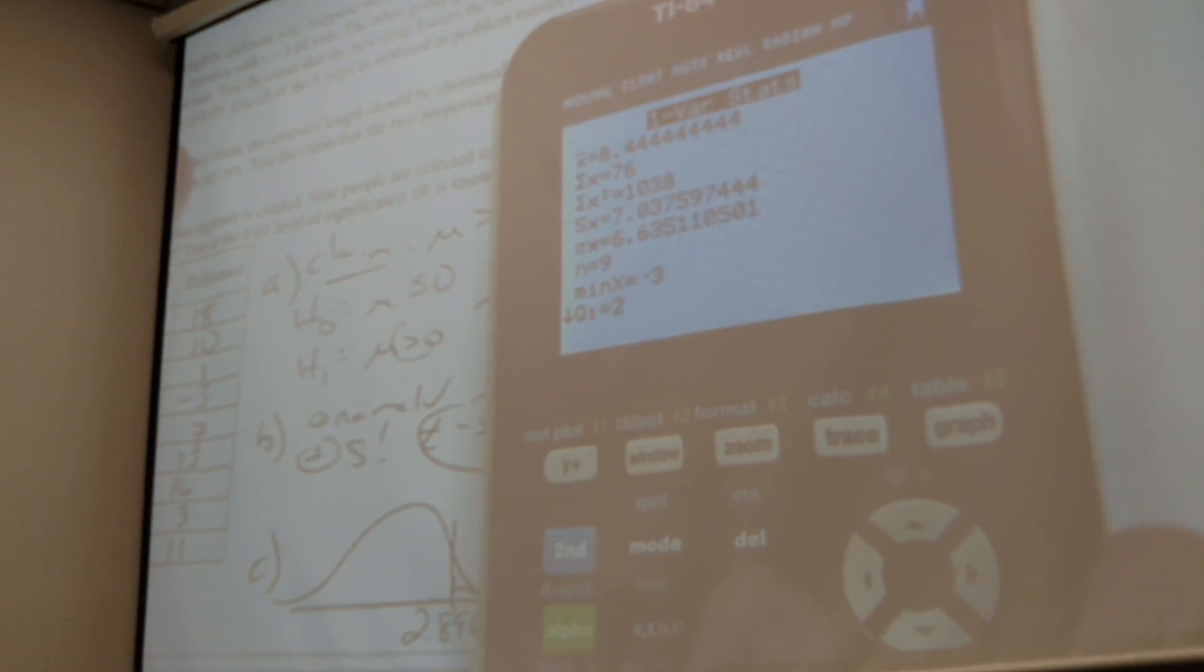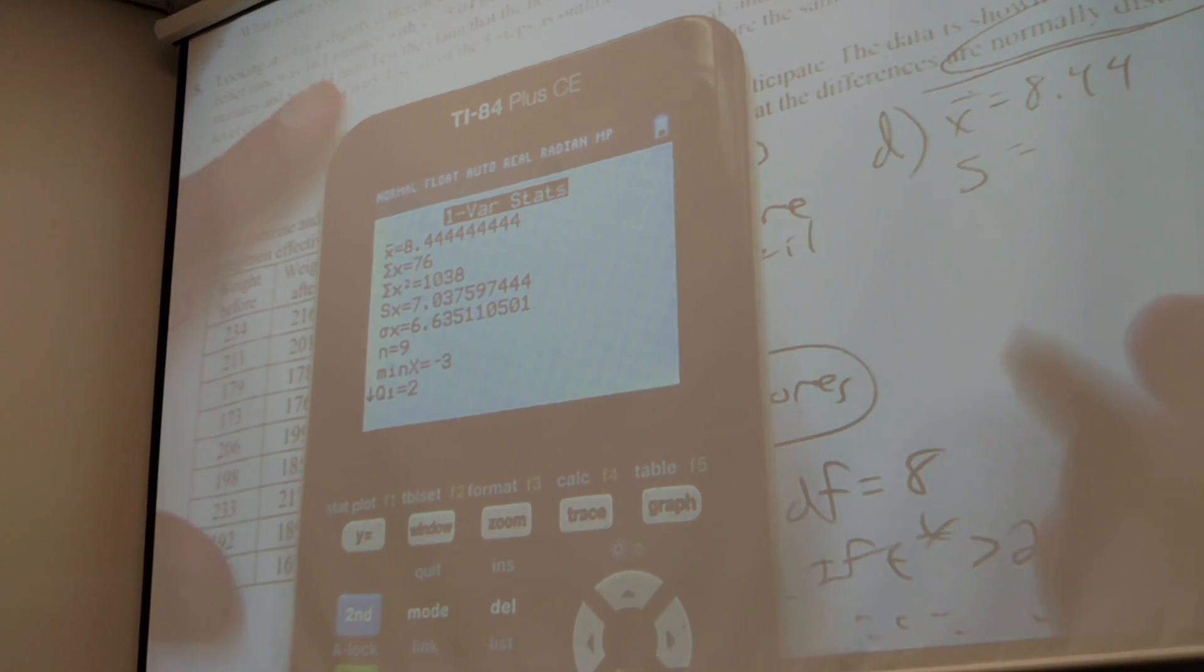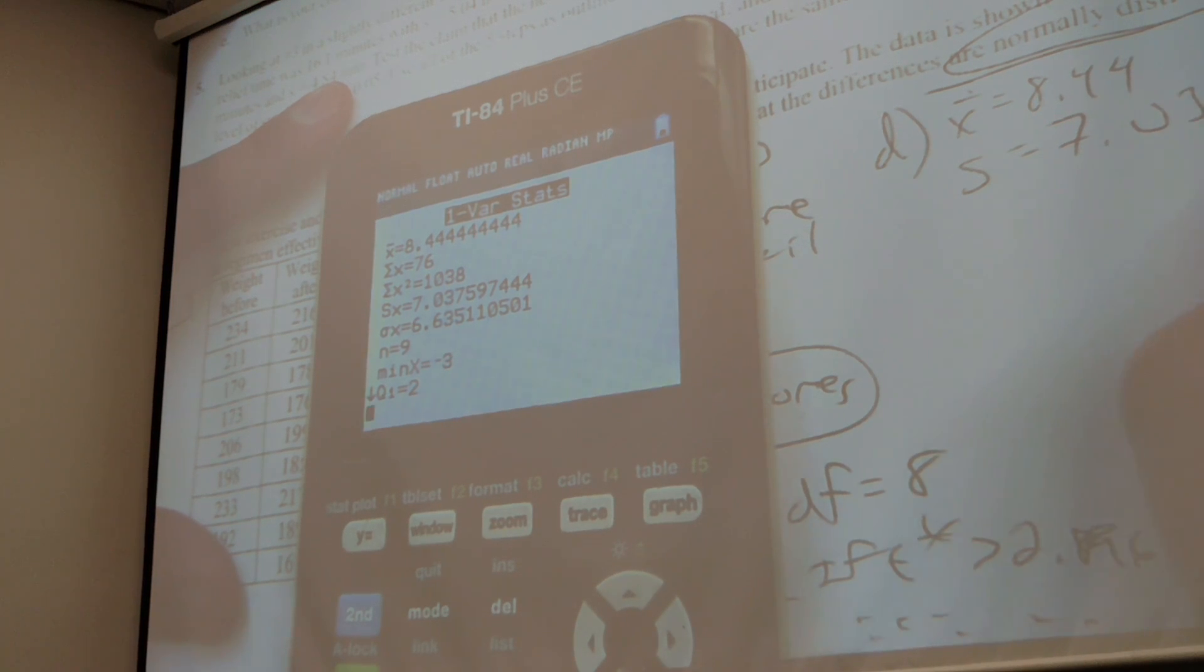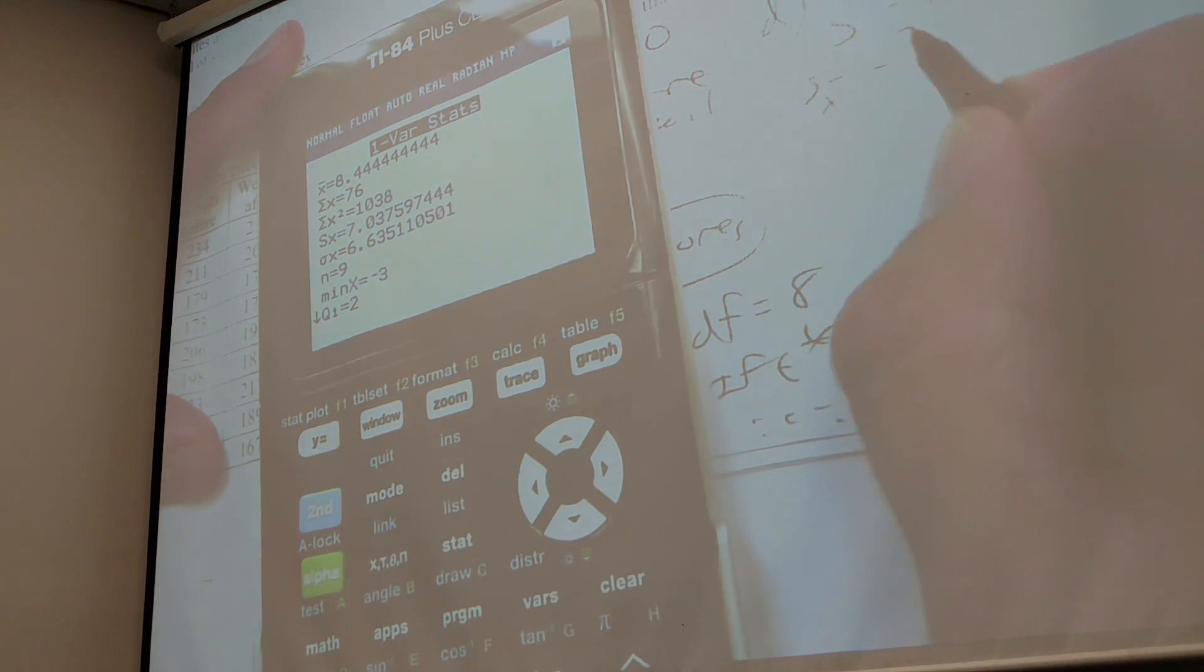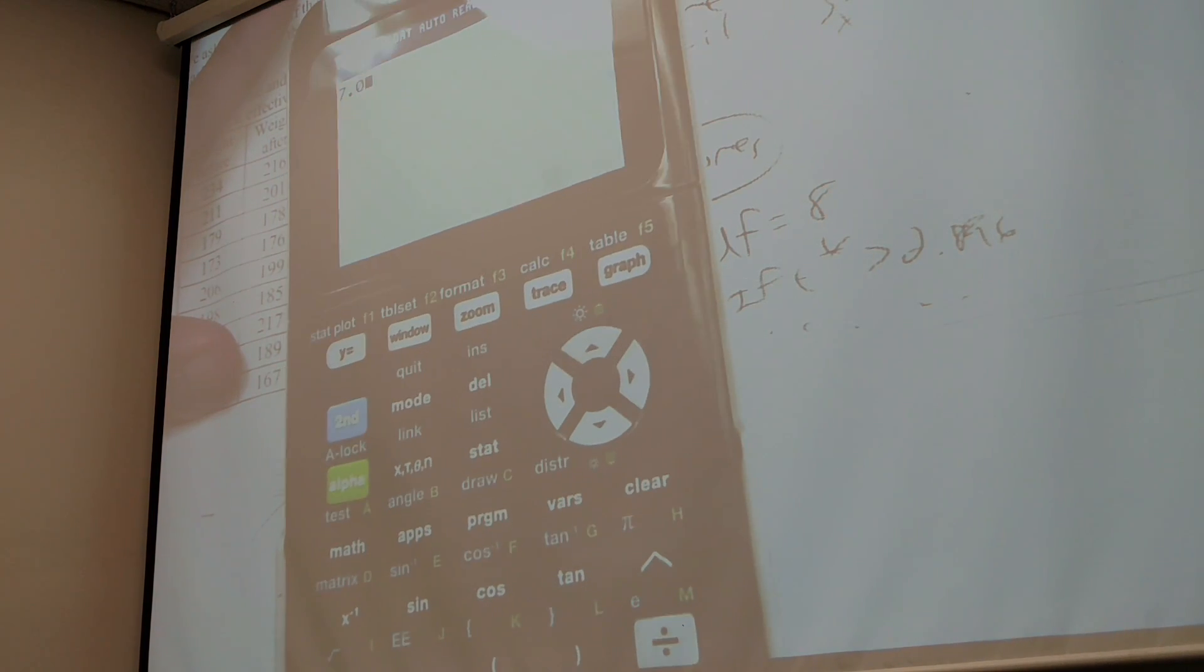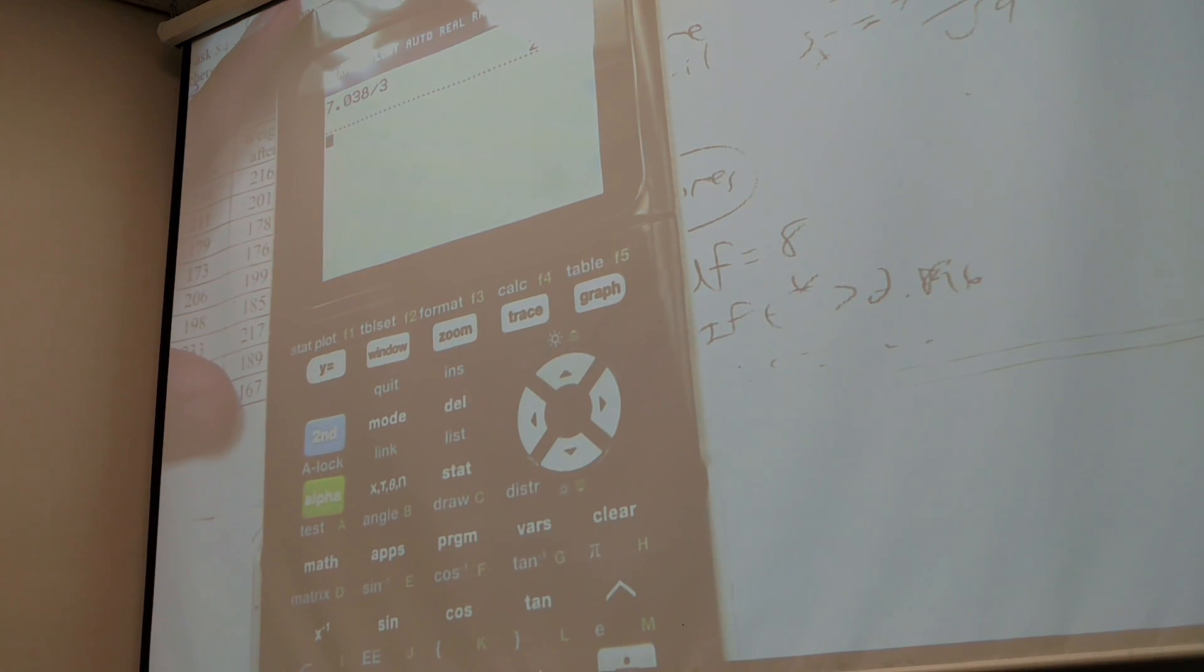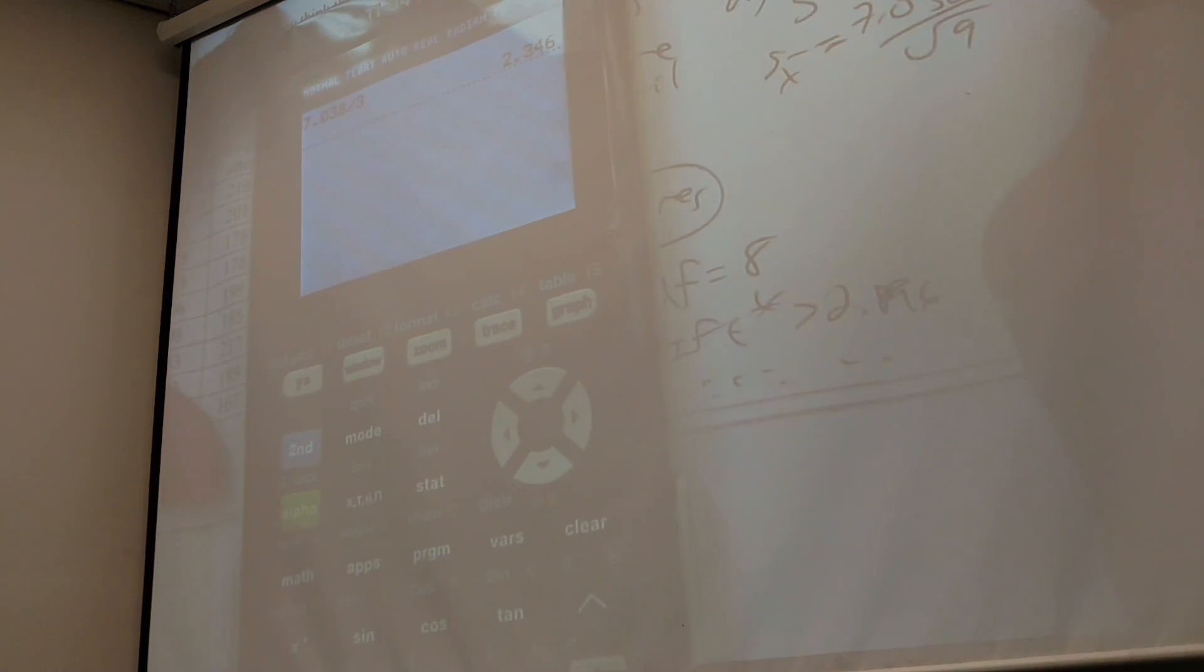Oh. X bar is 8.44. S is 7.038. So what's S sub X bar? 7.038 divided by square root of 9. 2.346.